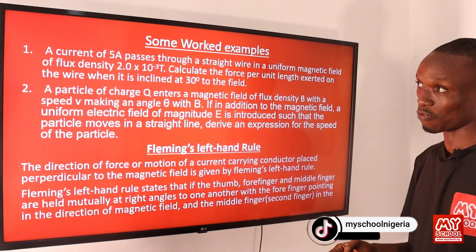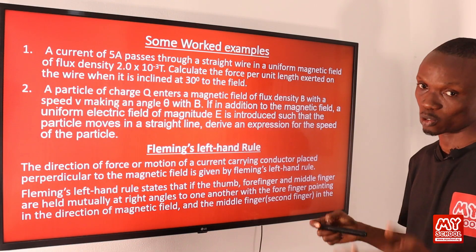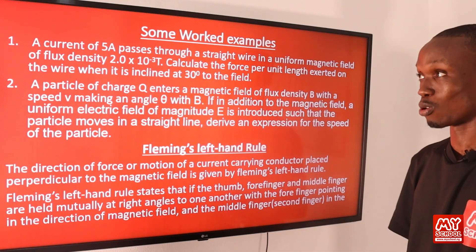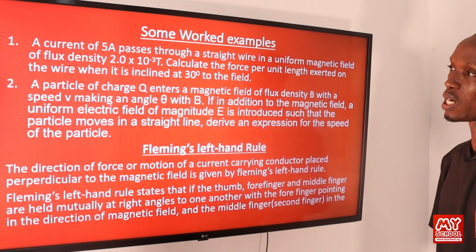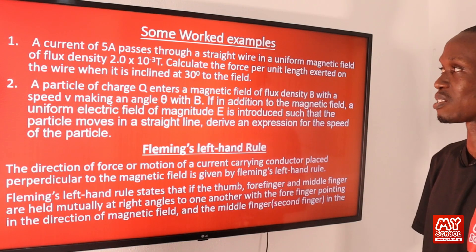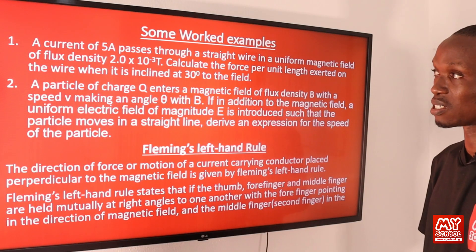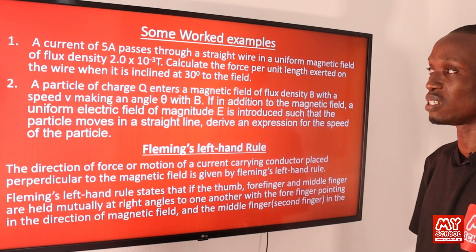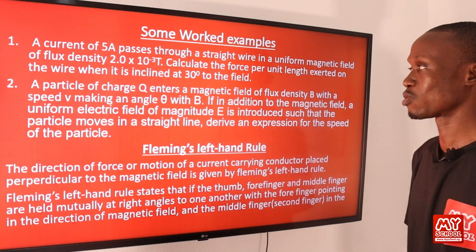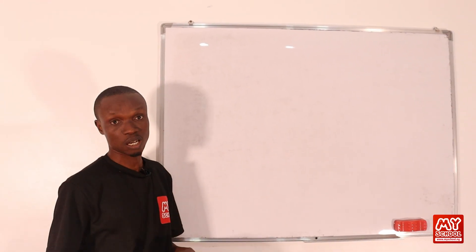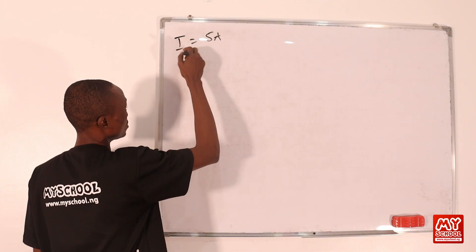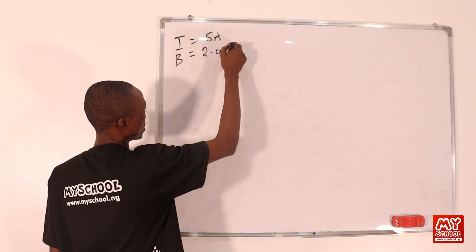Here are two examples to apply the formula F = BIL sinθ, where B is magnetic flux density, I is current, and L is the length of the conductor. Example one: a current of 5 amperes passes through a straight wire in a uniform magnetic field of flux density 2.0 × 10⁻³ tesla. Calculate the force per unit length exerted on the wire when it is inclined at 30 degrees to the field. The given parameters are: I = 5 A and B = 2.0 × 10⁻³ T.